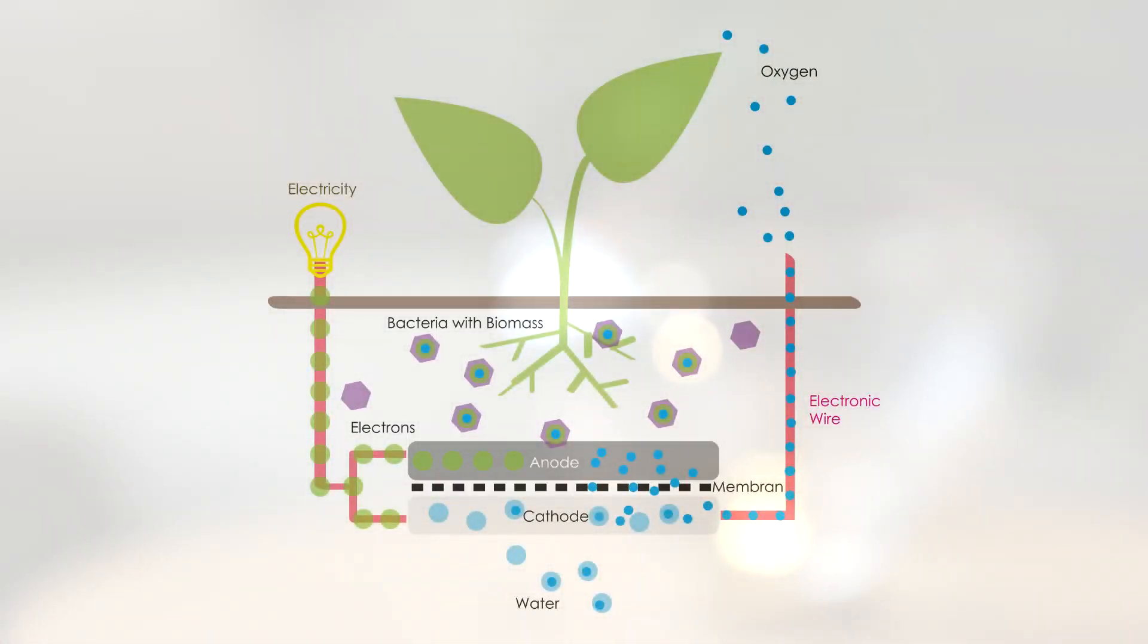This technology converts solar energy into bioelectricity without harming the plant. It is a process in which bacteria breaks up the excess biomass of the plant around the roots. As a by-product of this, pure water is generated.